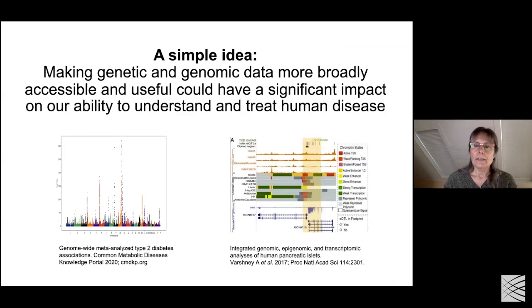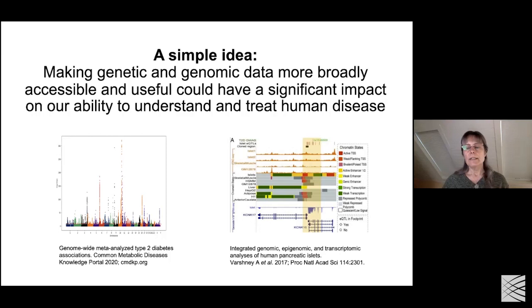This all started with a really simple idea - there were just tons of genetic association and other genomic data, such as epigenomic annotations, being amassed. These were all in different places, not coordinated, not integrated. The idea was that making these more integrated, more broadly accessible and interpretable could have a significant impact on how we understand human disease and find new drug targets.